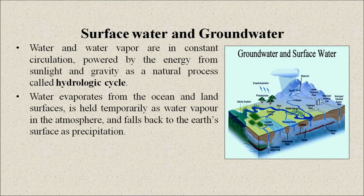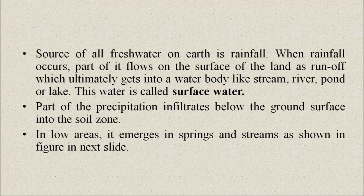Now, surface water and groundwater. Water and water vapor are in constant circulation powered by energy from sunlight and gravity, in a natural process called the hydrologic cycle. Water evaporates from the ocean and land, is held temporarily as water vapor in the atmosphere, and falls back to earth as precipitation. The source of all fresh water on earth is rainfall. When rainfall occurs, part of it flows on the surface as runoff, ultimately reaching a water body like a stream, river, pond, or lake. This water is called surface water.